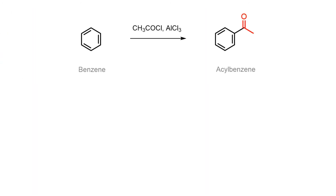To summarise, benzene may be forced to react with an acyl halide if a Lewis acid is added to generate a very reactive acylium ion intermediate. The mechanism proceeds through the electrophilic aromatic substitution pathway, with formation of a resonance-stabilised sigma-complex, and subsequent reformation of the aromatic sextet in the acylbenzene product.